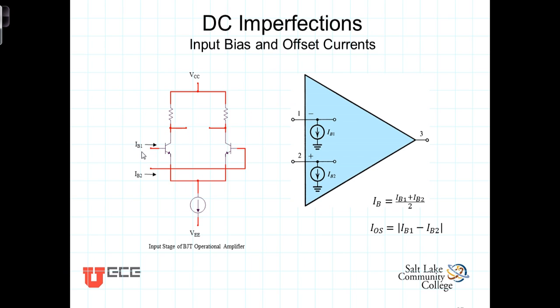require a relatively small input bias current. Even when you don't have anything else hooked up, just the power supplies, there are bias currents flowing into these two transistors.